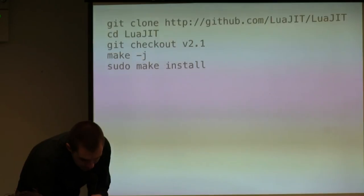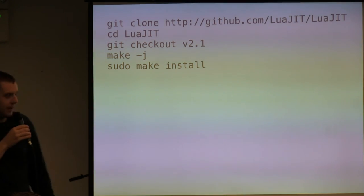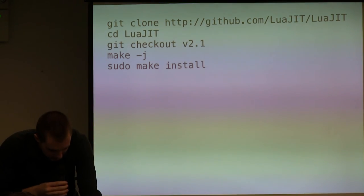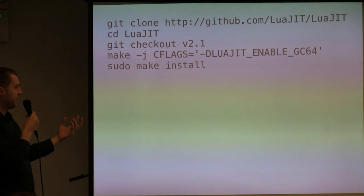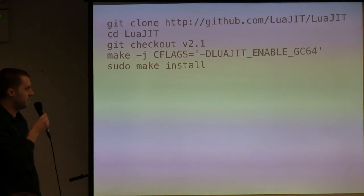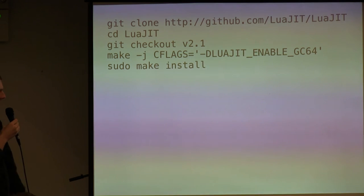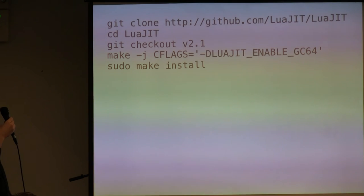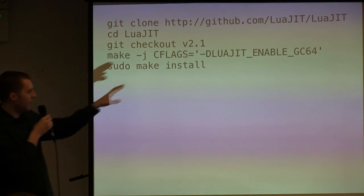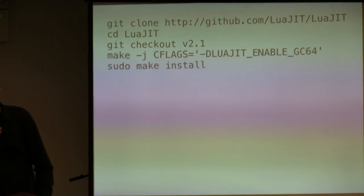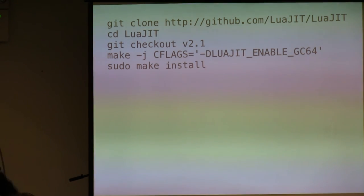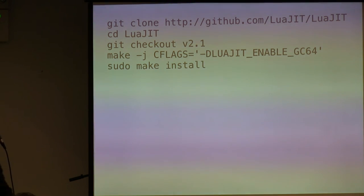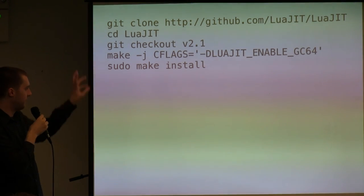LuaJIT used to be really good about bytecode being portable across any platform in any mode. That's no longer true, unfortunately. You have to have different bytecode so that calls stay fast. This is actually what you'll get if you check out LuaJIT — fun code. You can loop back to the start: if you want to use proper 64-bit mode, you can pass in extra compiler flags. It might become the default at some point. There are one or two small bugs in this mode — one known bug, maybe some unknown ones — but it's almost stable and almost ready to use properly.